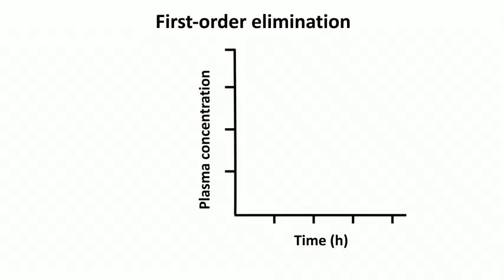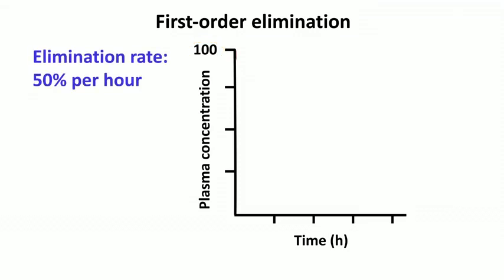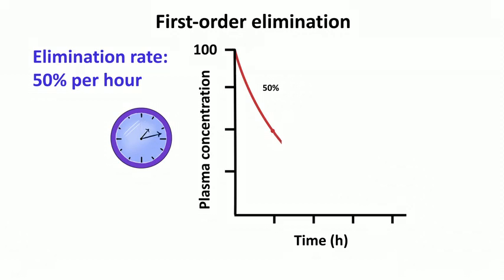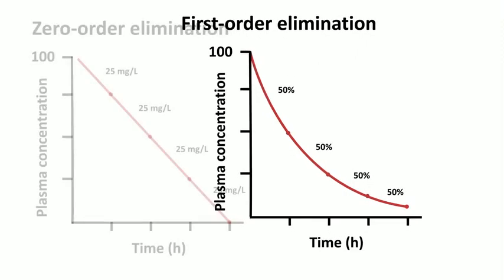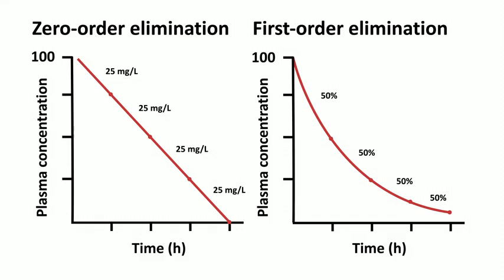Starting with 100 mg/L and eliminating 50% per hour: in the first hour you eliminate 50 mg (100→50), then 50→25, then 25→12.5, then 12.5→6.25. After four hours, zero-order elimination reaches a plasma level of zero, but with first-order elimination there's still a little drug left — in this example zero-order clears the drug faster.